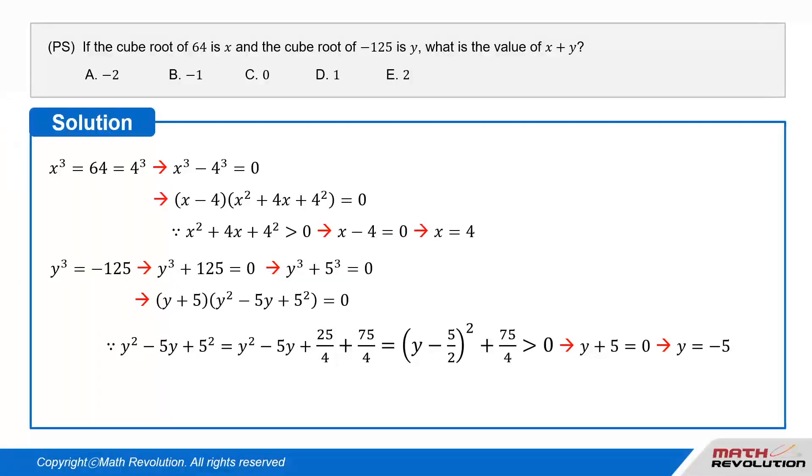y cubed equals negative 125. So, y cubed plus 125 equals 0. So, y cubed plus 5 cubed equals 0. That is,